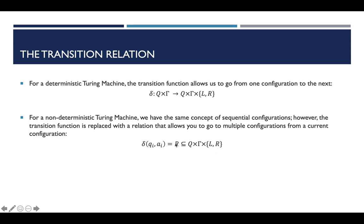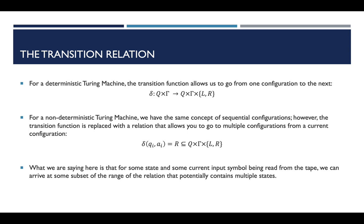So we could have one output configuration, we could have two, we could have 97, we could potentially have all of the possible combinations of an internal state, an alphabet symbol, and a left or right movement. Typically you won't have all of them, but you could. It's very fundamental to understand that given some state and some input symbol you're reading off of the tape, we can now arrive at multiple different outcomes. We are no longer restricted to just one possible outcome — now we can arrive at a whole bunch of different outcomes at the same time.